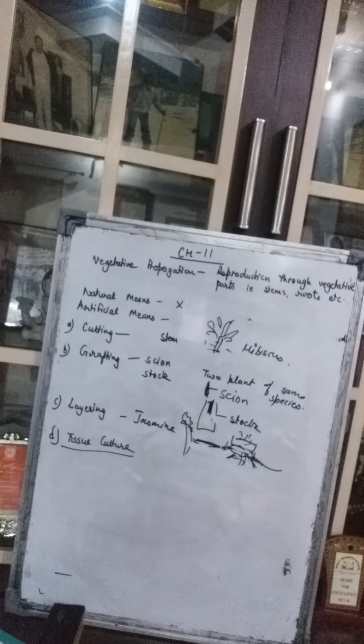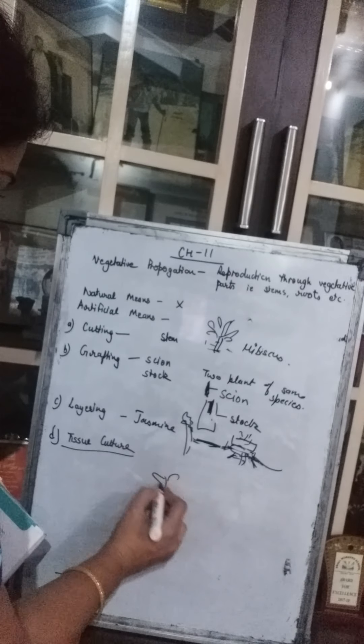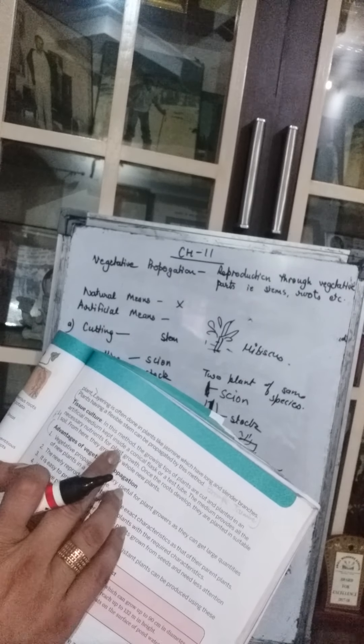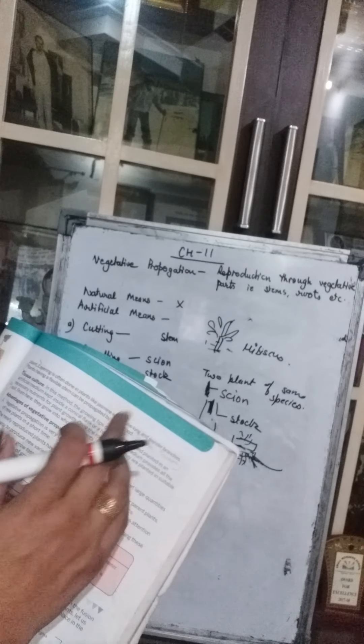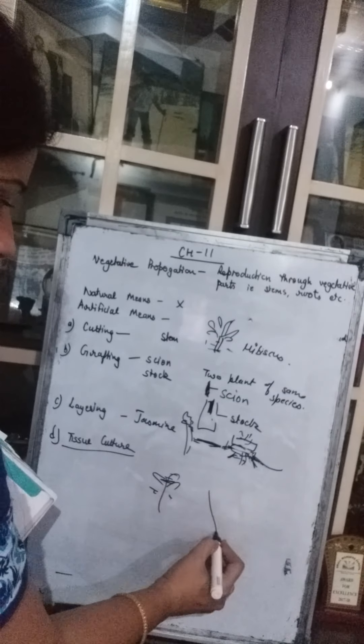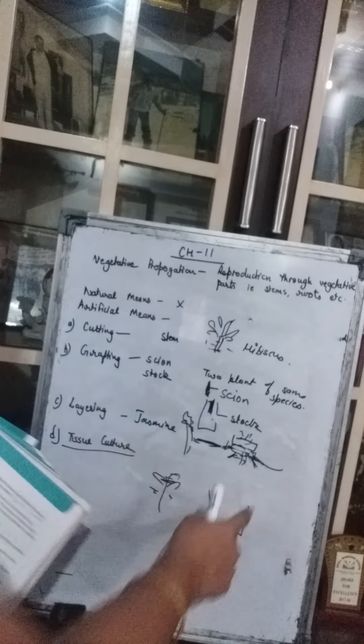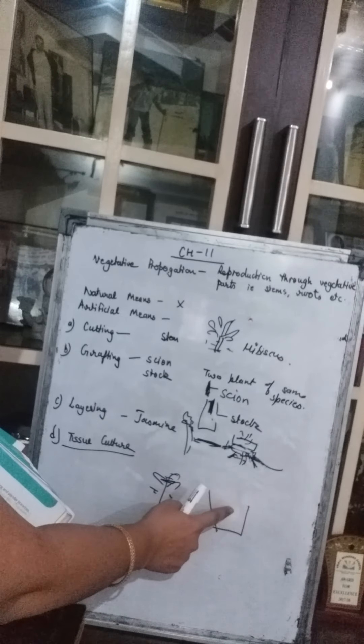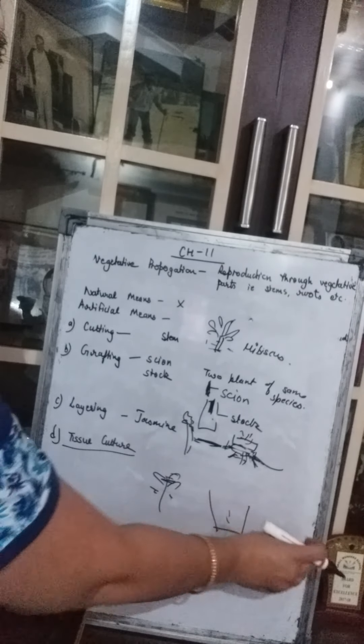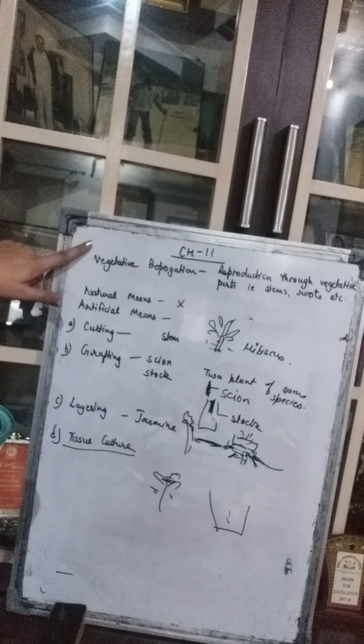The fourth method is tissue culture. The growing tips of the plant are cut and placed in an artificial medium inside a conical flask or a test tube — not in mud. The medium provides all necessary nutrients, proper temperature, and water. Once the roots are developed, the plant is taken out and planted in suitable soil.